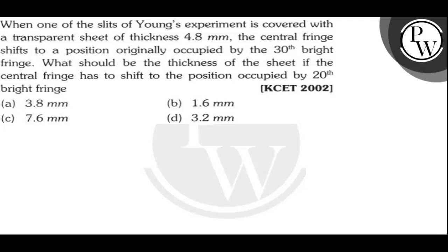Hello bacho, let's read the question. When one of the slits of Young's experiment is covered with a transparent sheet of thickness 4.8 millimeter, the central fringe shifts to a position originally occupied by the 30th bright fringe. What should be the thickness of the sheet if the central bright fringe has to shift to the position occupied by 20th bright fringe?